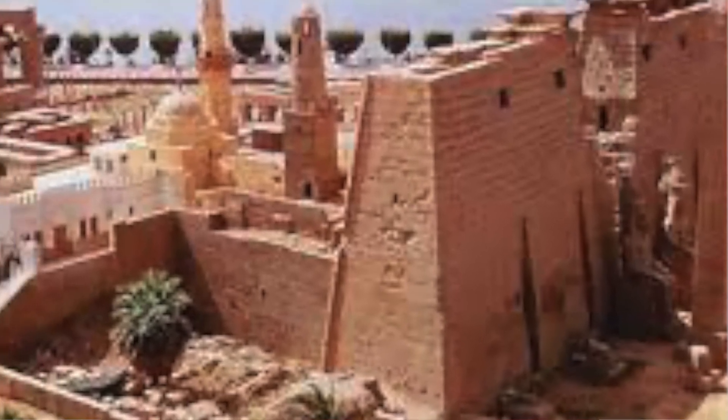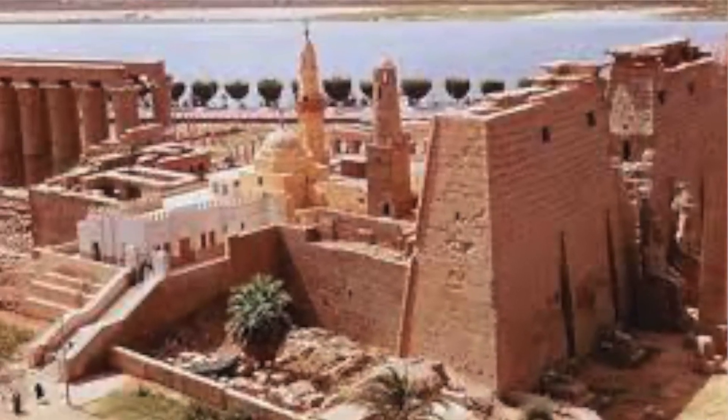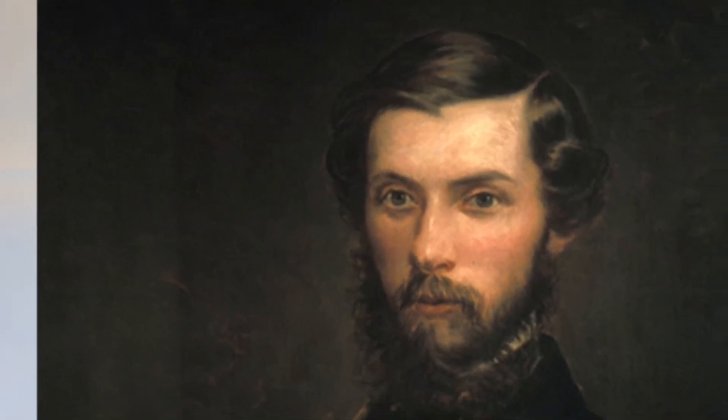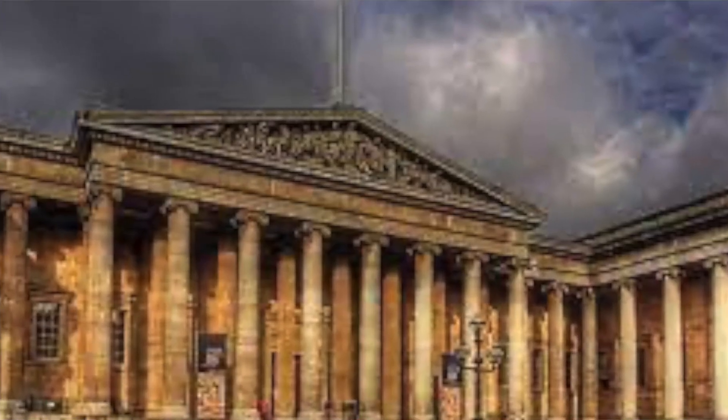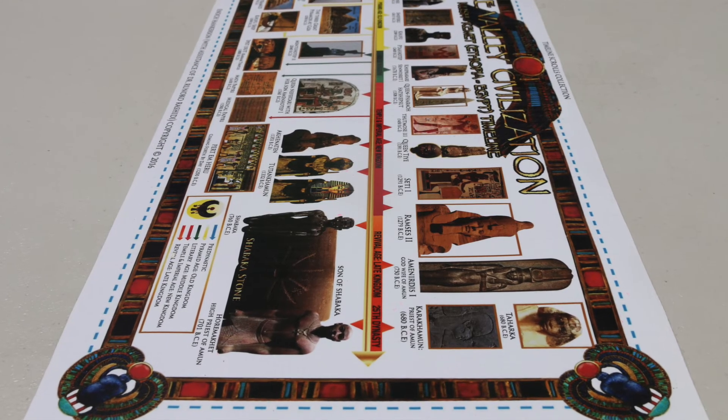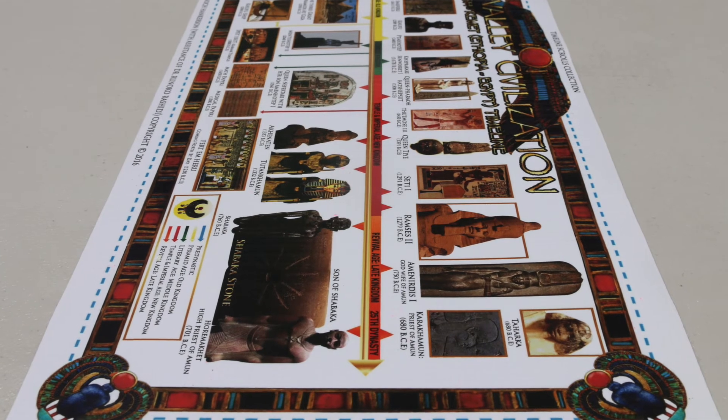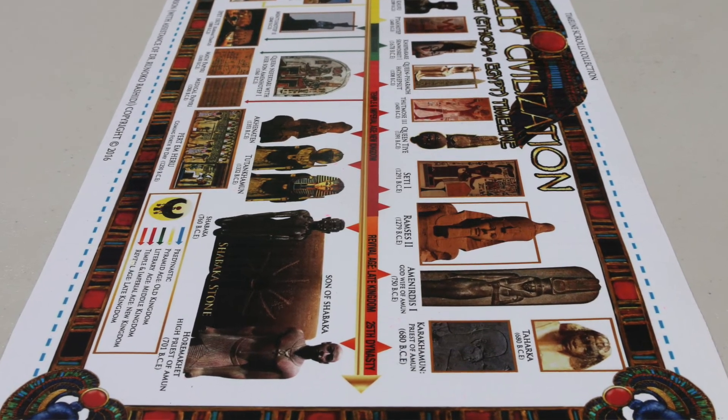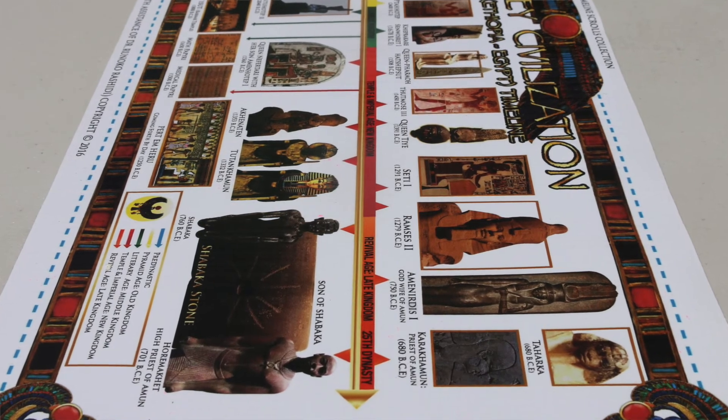Fast forward a couple of millennia to 1858, and the document is found again at Ipet-Resyt, also known as the Temple of Luxor, meaning 'the southern sanctuary' in ancient Egyptian. It was sold to Scottish collector Henry Rhind in 1858, who then sold it to the British Museum of London in 1865. You can see how important that 3,000-year period is in the ancient African wisdom system that allowed the passing on of two of the seven liberal arts: arithmetic and geometry.